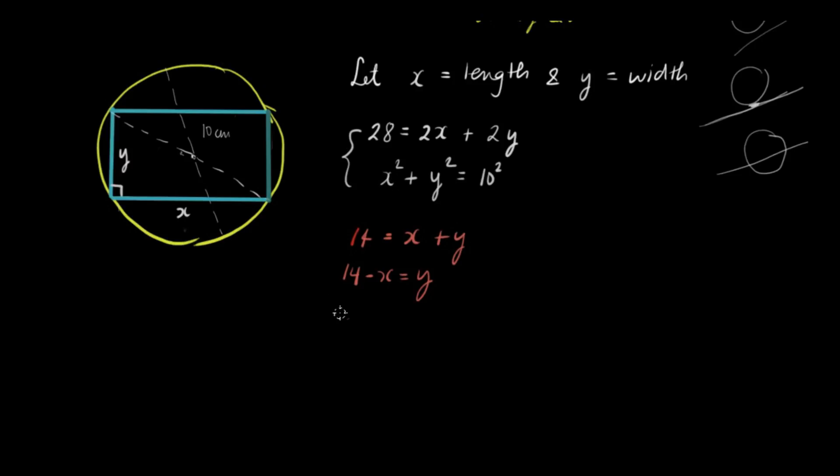From the second equation, we have x squared plus, we'll replace this by 14 minus x, so 14 minus x squared is equal to 10 squared.